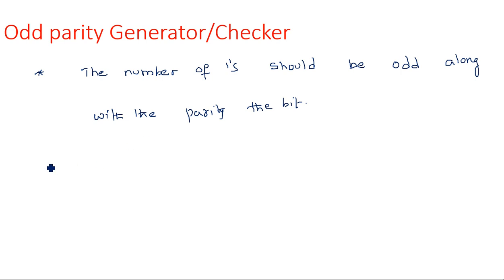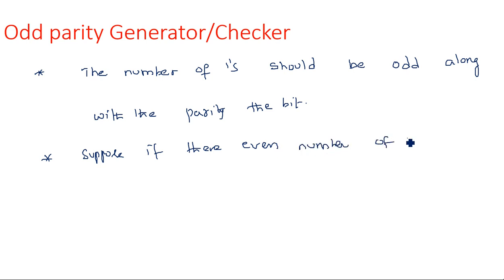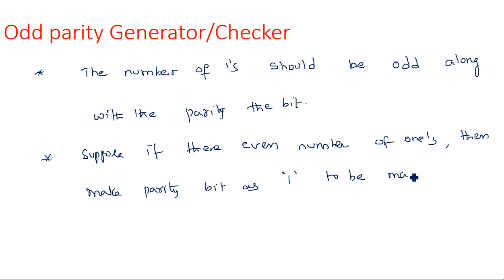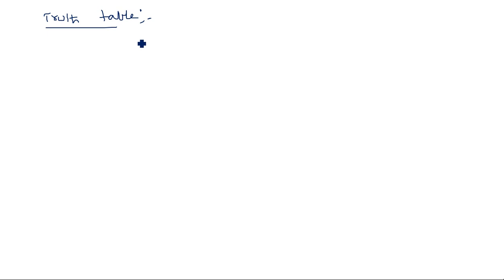If there are even number of ones, then make the parity bit as one to make the overall number of bits odd. So with that concept, we are going to first draw the truth table with inputs a, b, c, d and output f, which is the odd parity bit.